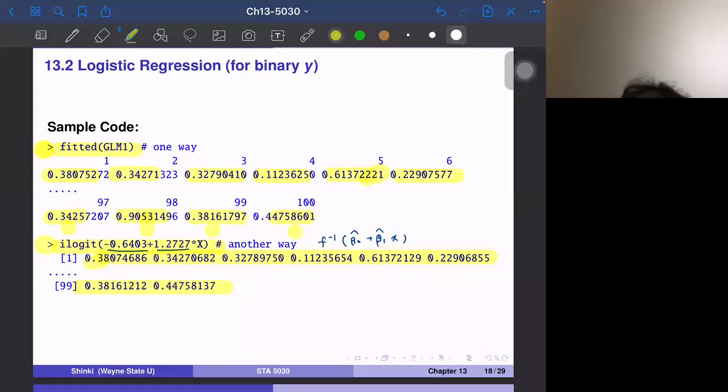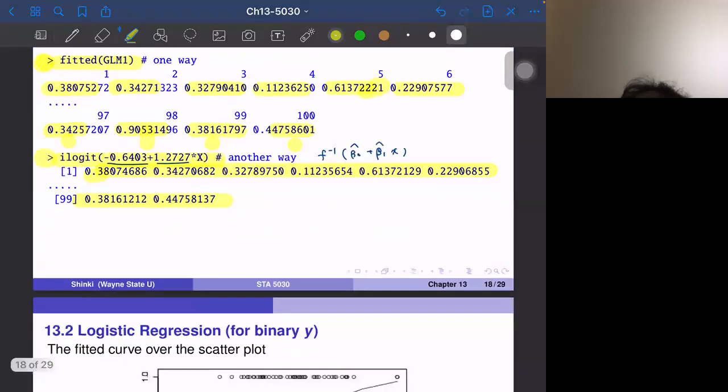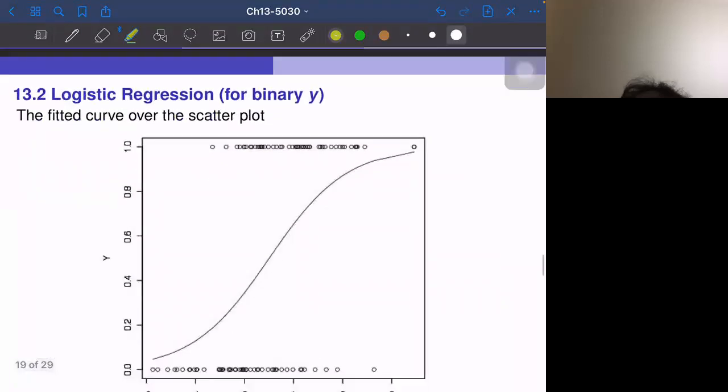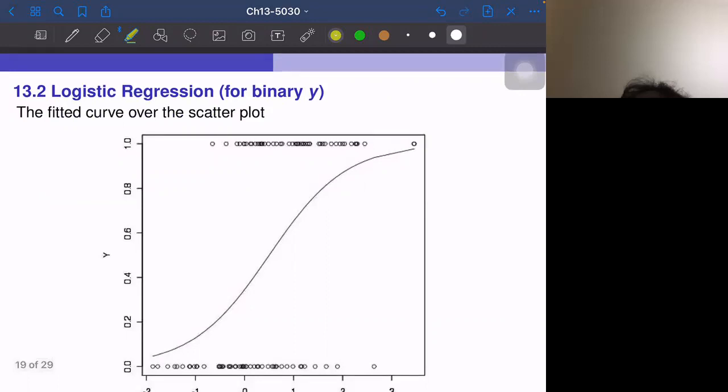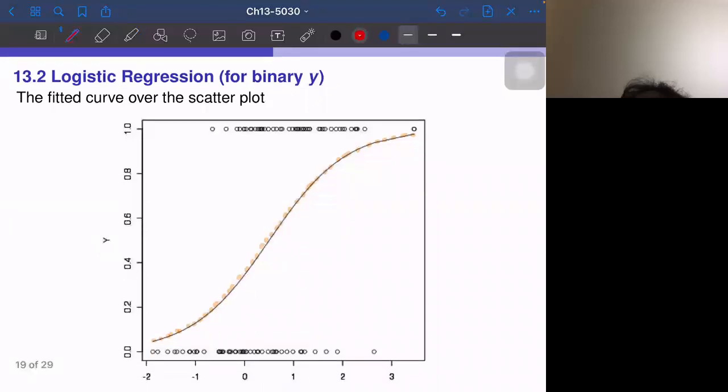This is a plot. For each value of X, we calculated the fitted value, then connect them. This becomes the curve of F inverse of beta X. This is estimated probability. If we have a new observation, we can estimate the probability. For example, given X equals 1.5, what's the success probability? We can say the success probability is 78%.